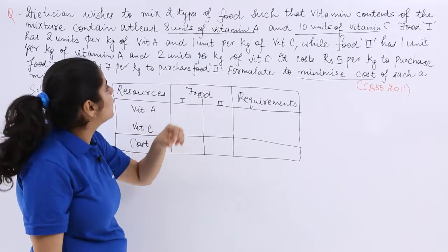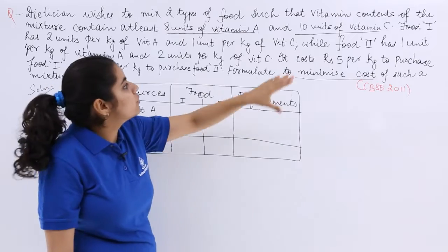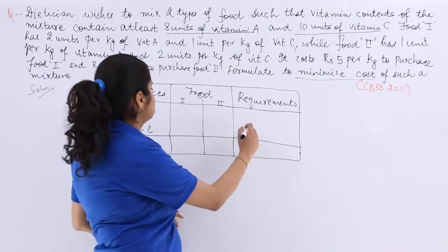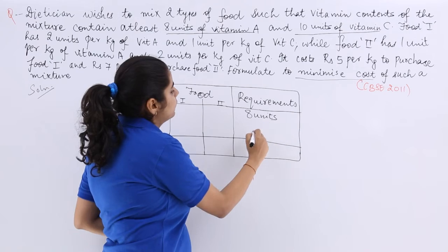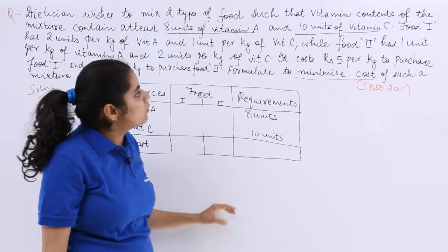The first line does not give me any information. And the requirements to be fulfilled are at least 8 units of vitamin A and 10 units of vitamin C. So 8 units of vitamin A, 10 units of vitamin C. Then I have what?